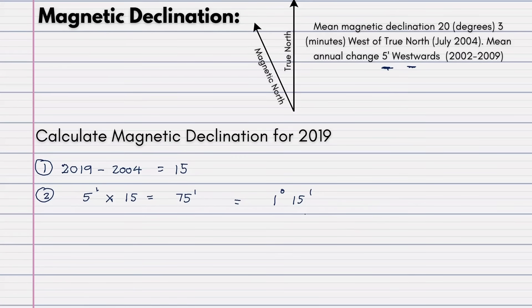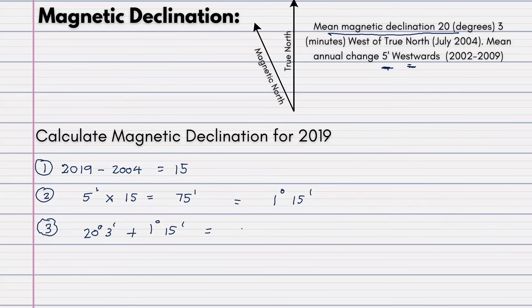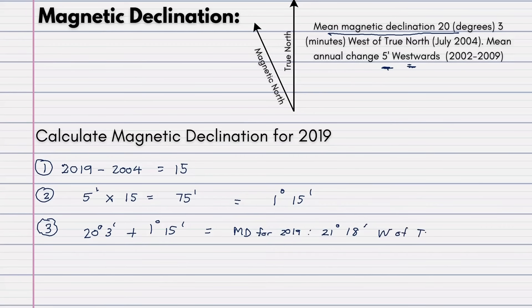Since the change is westwards, we add. Step 3: the mean magnetic declination is 20 degrees 3 minutes, plus the total change of 1 degree 15 minutes. Adding: 20 plus 1 equals 21 degrees, and 3 plus 15 equals 18 minutes. The magnetic declination for 2019 is 21 degrees, 18 minutes west of true north. Remember, your answer must always take this form: MD for [year], [degrees] degrees [minutes] minutes west of true north.